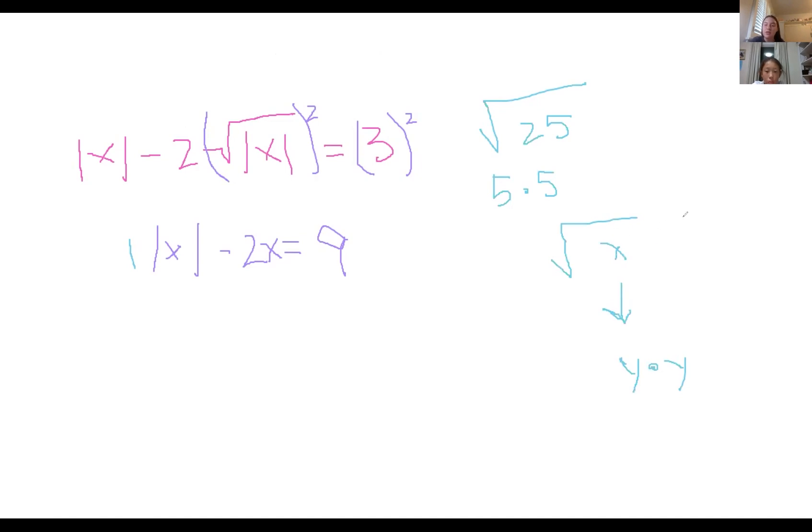So what you're going to do is on the other side of the equal sign, you're going to do 3 times 3 because it's 3 to the second power, in the same way that it would have been y to the second power.